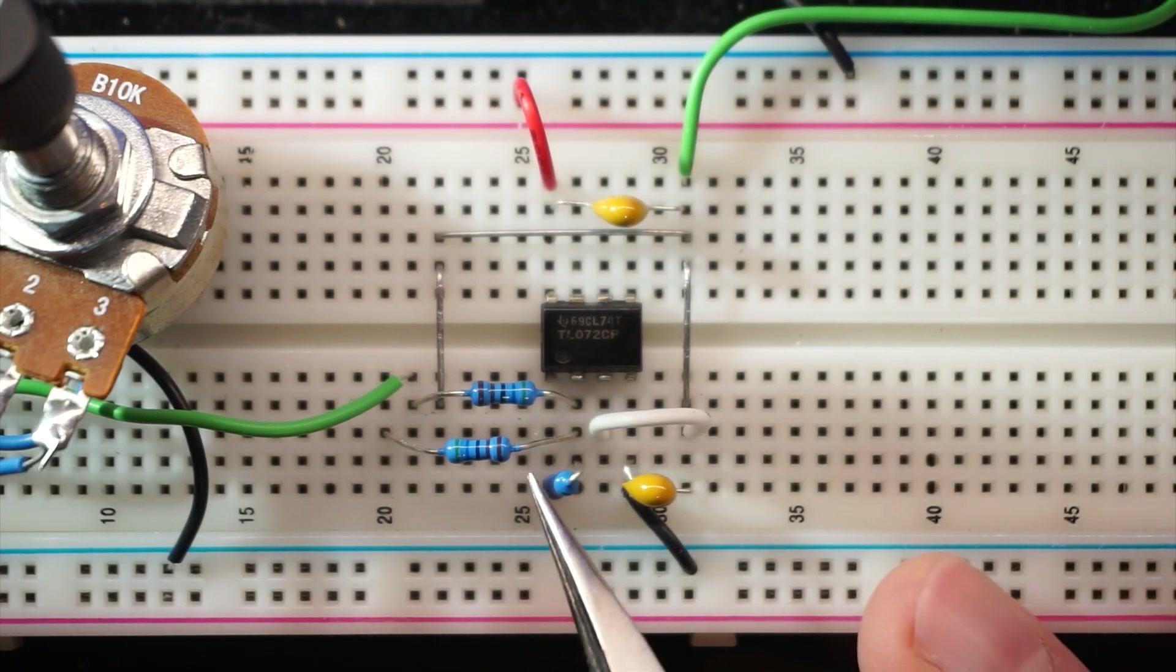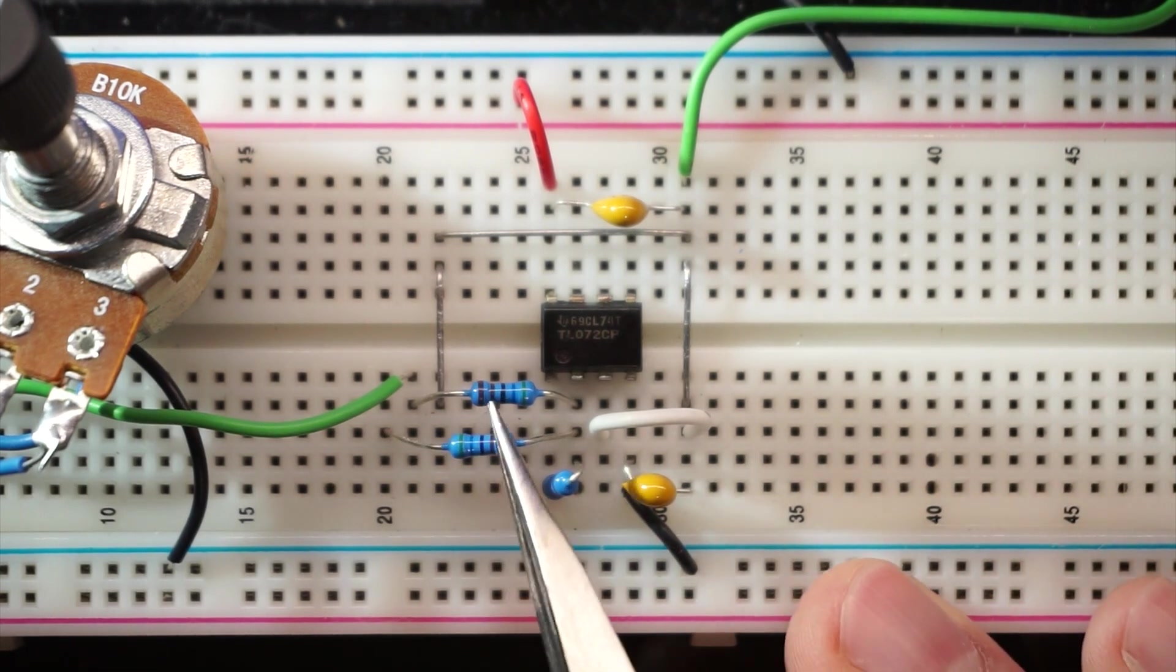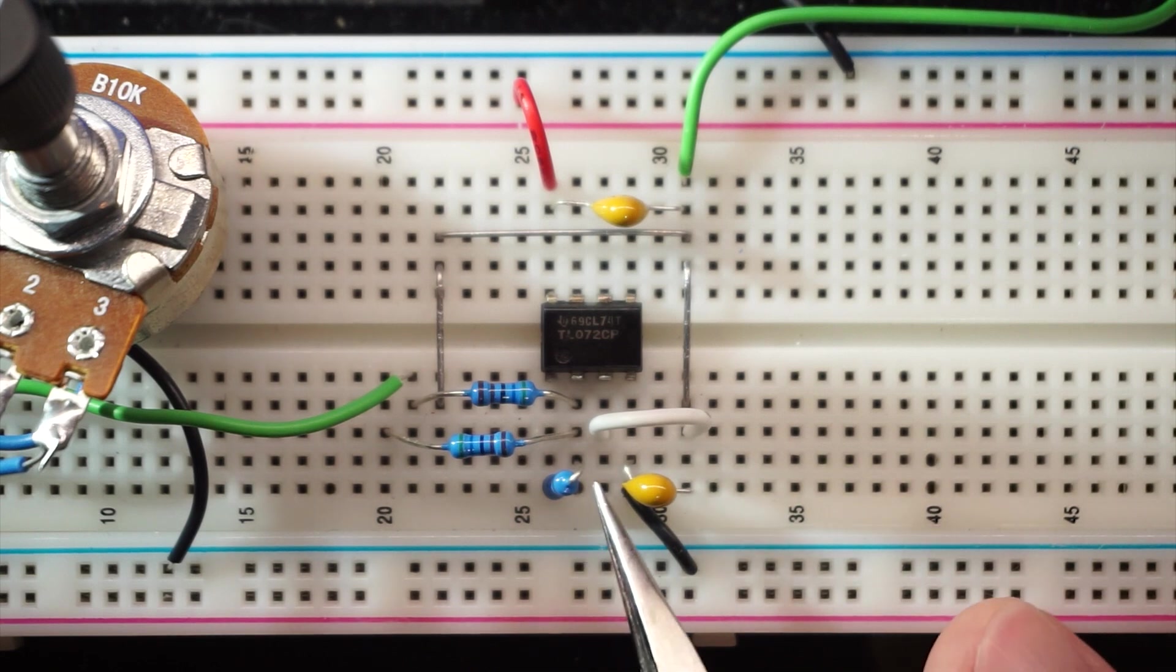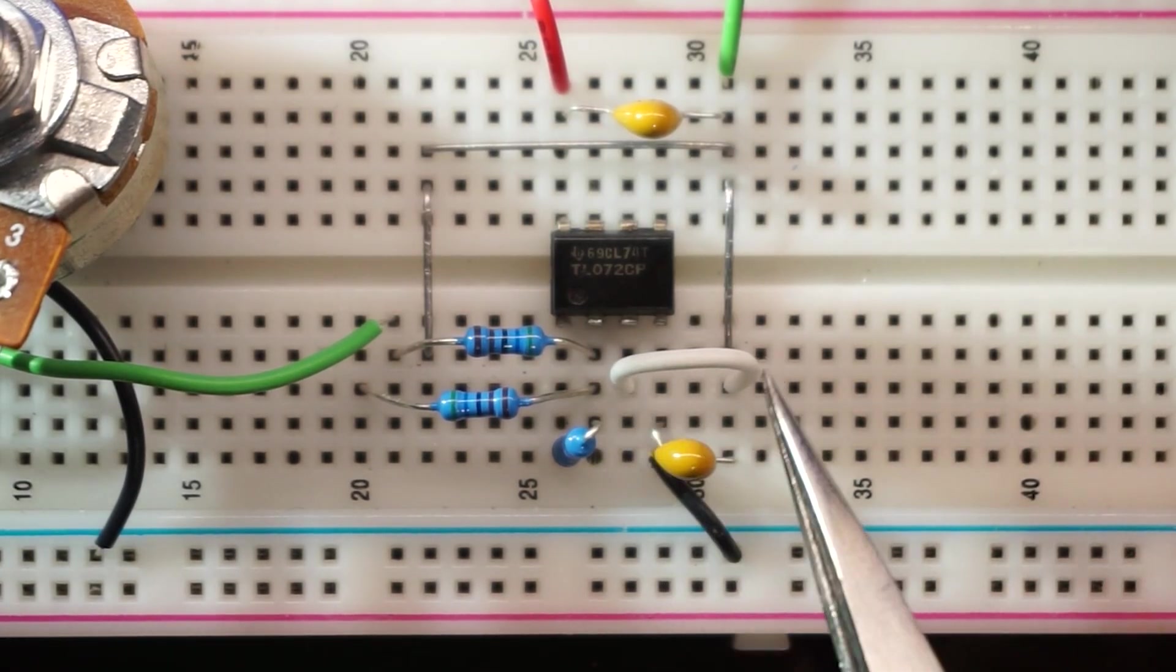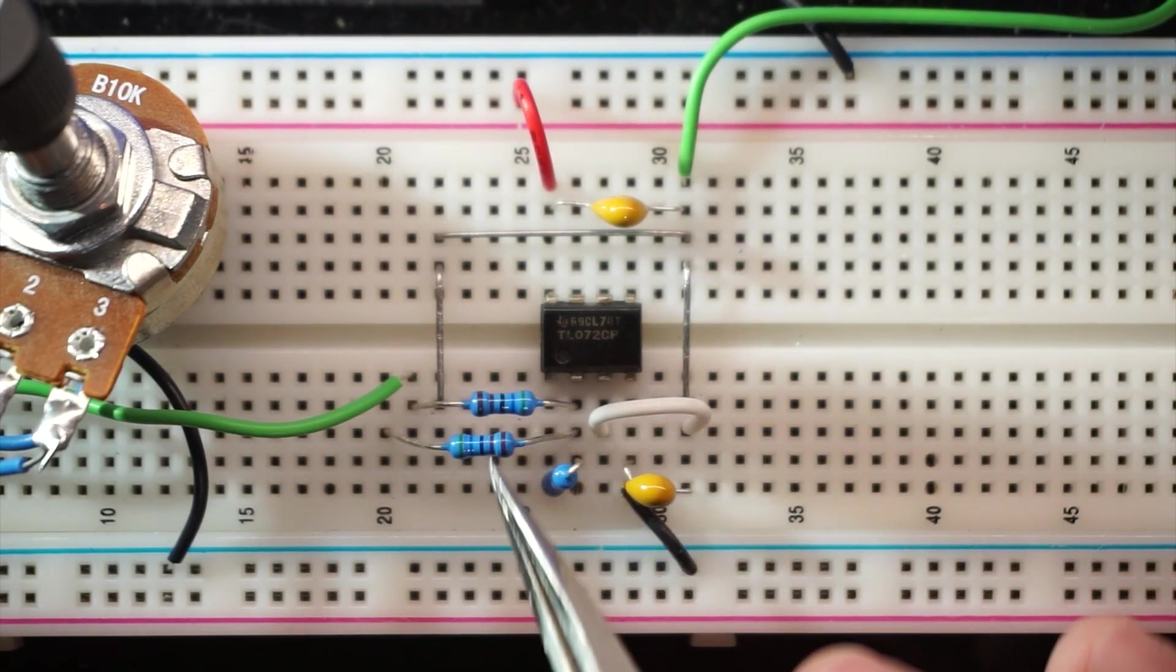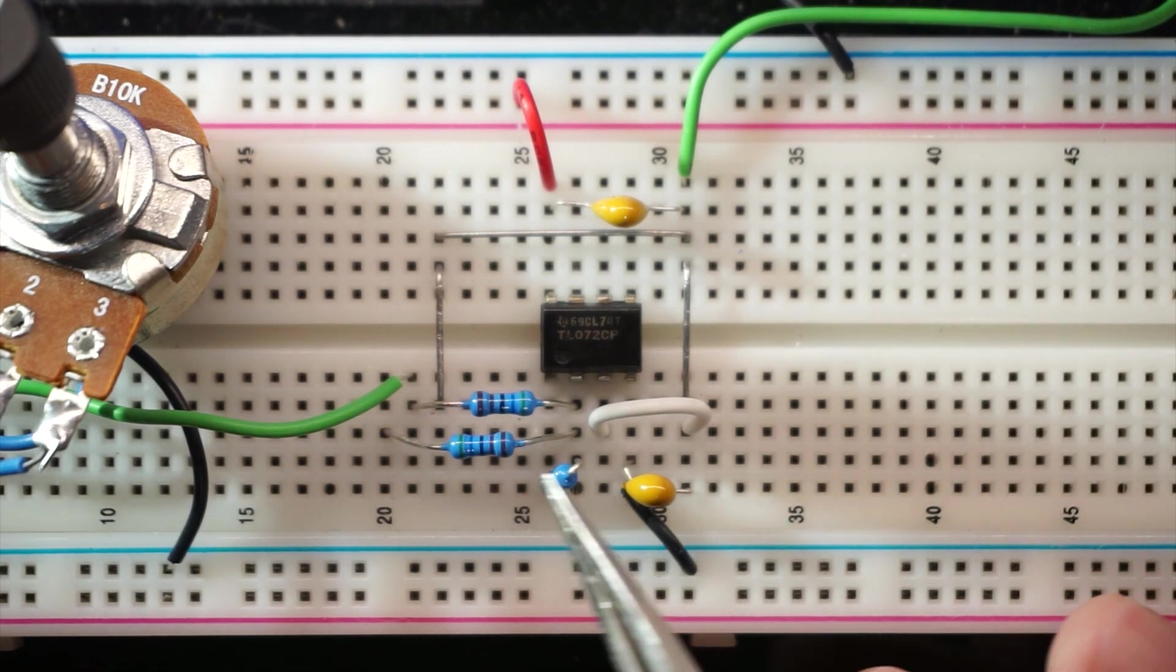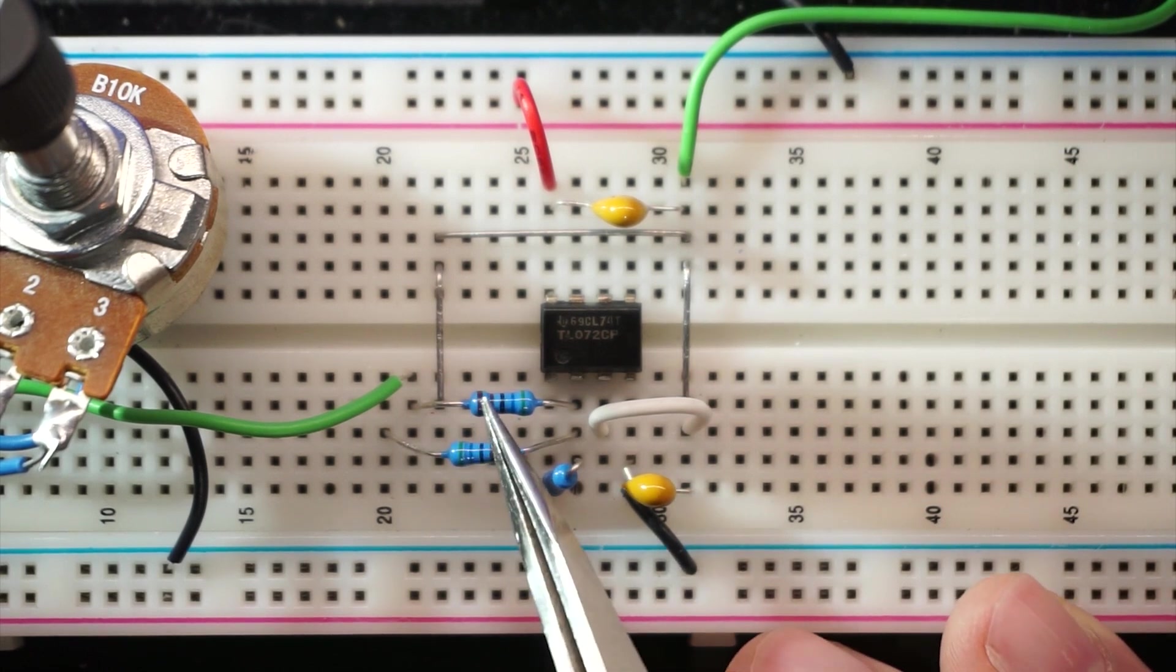Here's our summing amplifier, basically an inverting configuration. My input resistors both go to pin 2, the inverting input, and I have my feedback resistor from the output back to the inverting input. My non-inverting terminal is connected to ground. All these resistors are 5.6k, so the overall closed loop gain is 1. Whatever I see at the input, I should see at the output, but I'm adding these two terminals together.